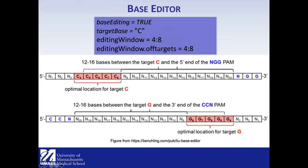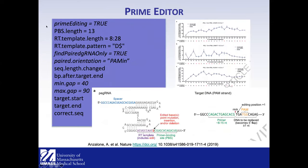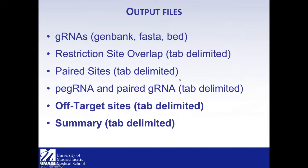The advantage of Bioconductor packages is that you can change a number and everything else follows. The output files include guide RNAs in different formats, restriction site overlaps for validation, paired guide sizes, and paired guides for prime editing. For off-target analysis, the two most important outputs are the summary file and the off-target sites file.